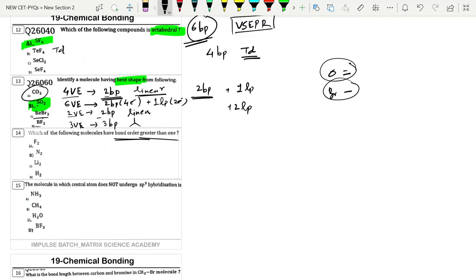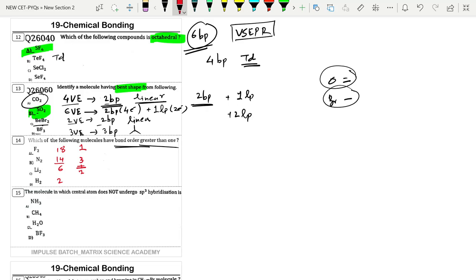Which among the following has greater than 1 bond order? Using the shortcut: F2 has 18 electrons which gives 1 bond, Li2 has 6 electrons which gives 1 bond, H2 has 2 electrons which gives 1 bond, and N2 has 14 electrons which gives 3 bonds. So N2 has bond order 3, which is greater than 1.